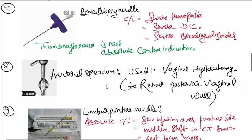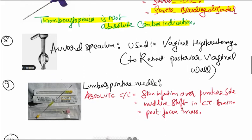This is the bone biopsy needle. Contraindications are severe hemophilia, severe DIC, severe bleeding disorder. Thrombocytopenia is not an absolute contraindication for this.